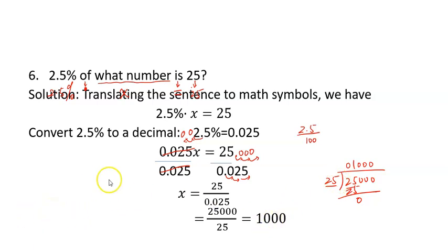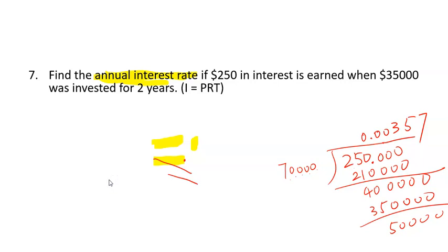And let's look at another word problem involving a percent. Find the annual interest rate if $250 in interest is earned when $35,000 is invested for two years. So we have the formula for the interest, I equals PRT.